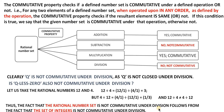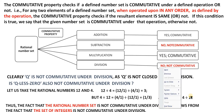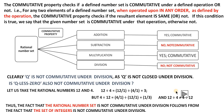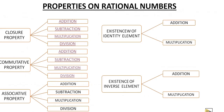We will stop here and see the other properties in the next class. The remaining properties to be covered are associative property, existence of identity element, and existence of inverse element. Distributive property will also be done in another one or two sessions. Thank you, have a good day, and keep watching.